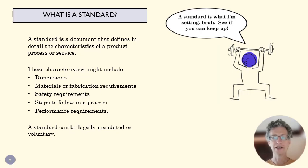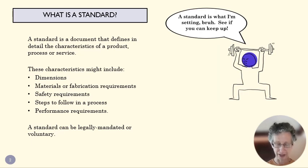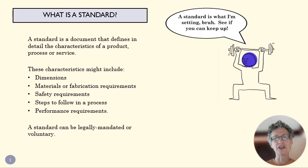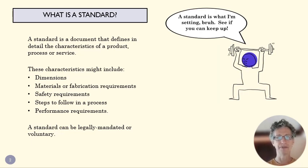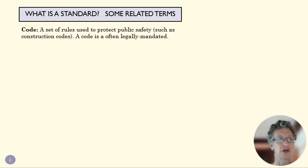Standards can be either voluntary or legally mandated, so a standard is a very broad category that includes a lot of different kinds of descriptions of how a product or process should happen. The basic idea is that a standard tells us something we have to live up to — a kind of minimum requirement that we're trying to meet.